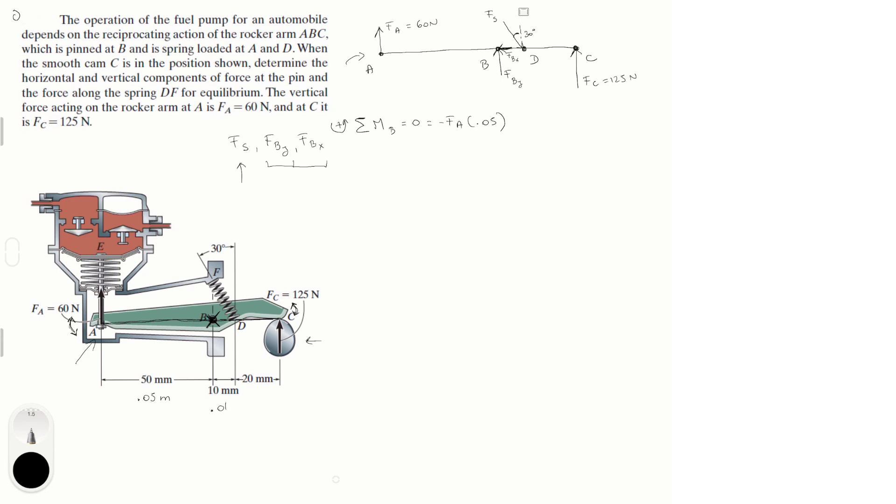10 millimeters is 0.01 meters and 20 millimeters is 0.02 meters. Why do I do meters? It's because it's more common to do Newton meters than Newton millimeters. Although you could also do that, but I like to use meters because this is what I'm used to.